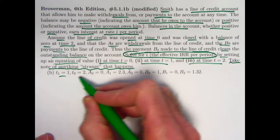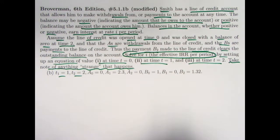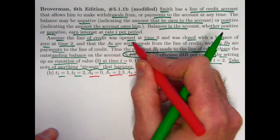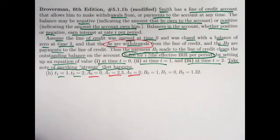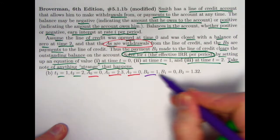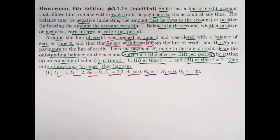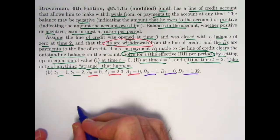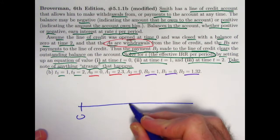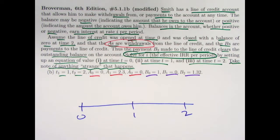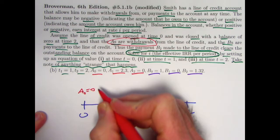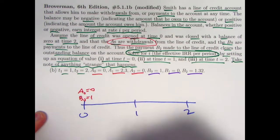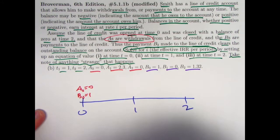Okay, so time zero is assumed to be zero. Time one is one. Time two is two. You've got the A's, which are withdrawals. Smith is taking that money out of the account. And the B's, which are payments. Smith is putting money into the account with those things. Let's make a timeline. We've got our three times zero, one, and two. A zero, let's put that here, is zero.